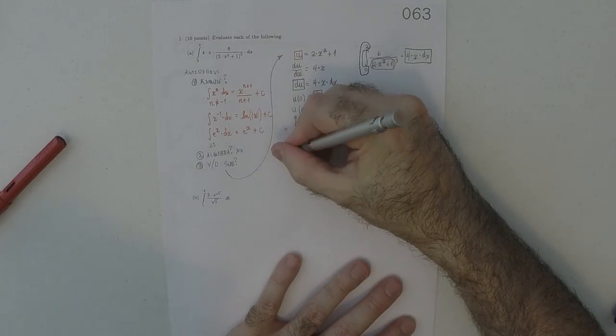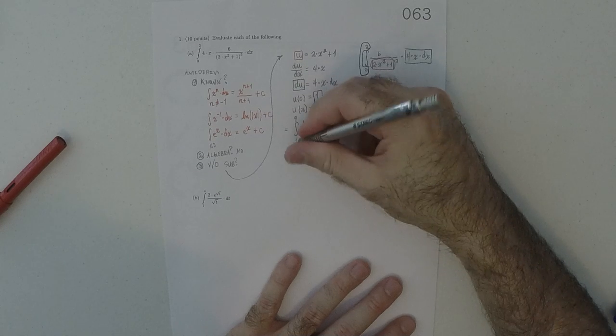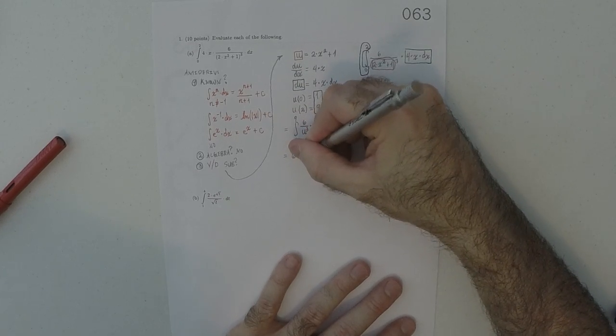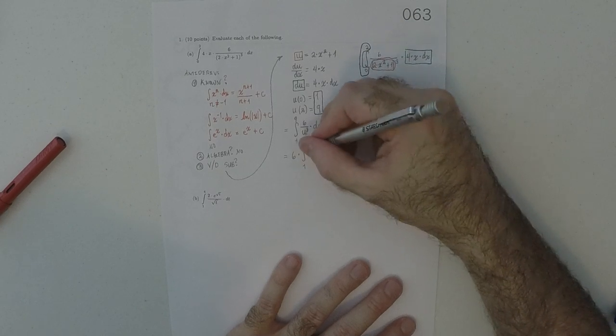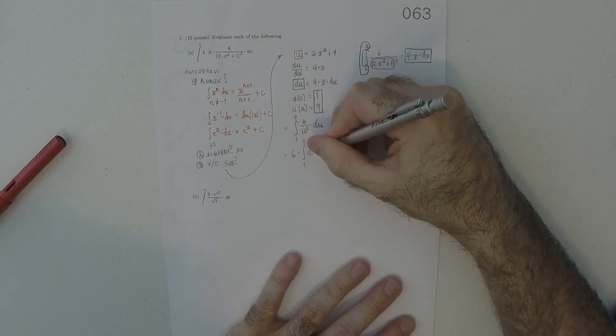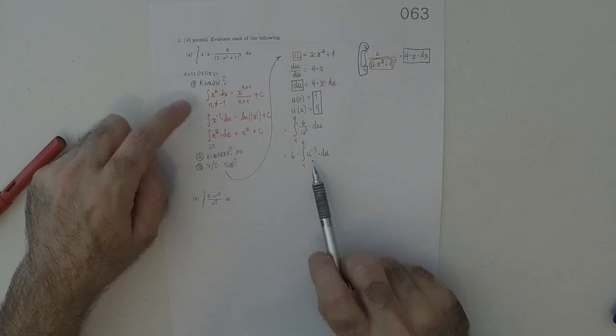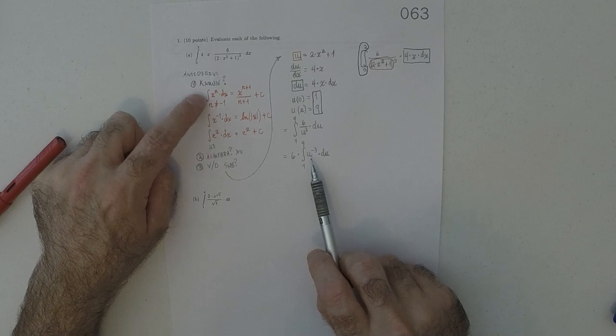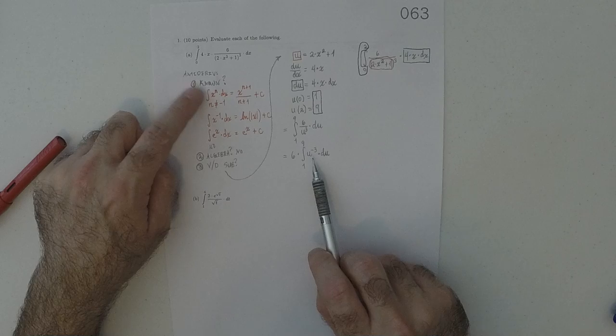And now, I'll just make a very minor changes. I'll factor the 6 out. Then, I'll write 1 over u cubed as u to negative 3, du, like that. So, then, now, this is one of the ones that we know. It's that one, with n is negative 3.